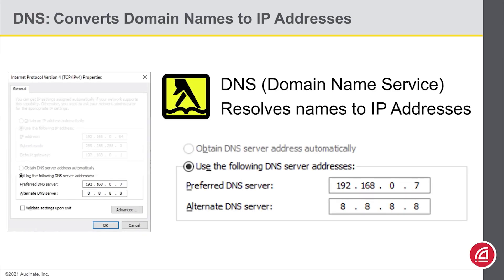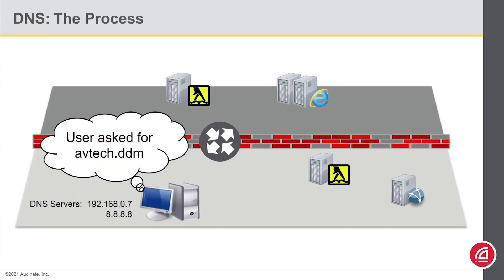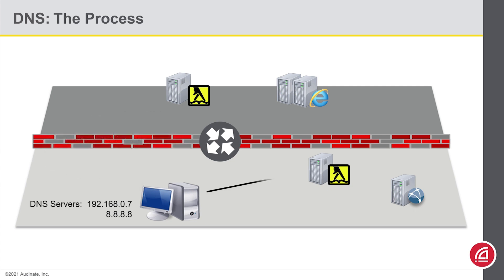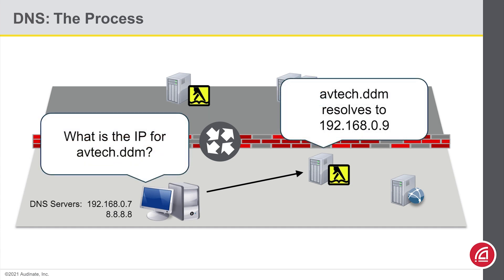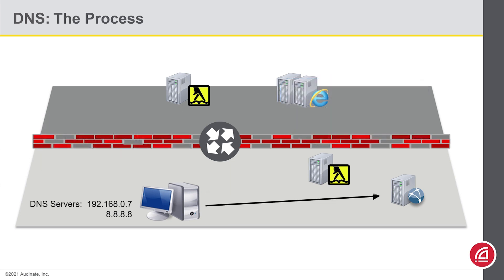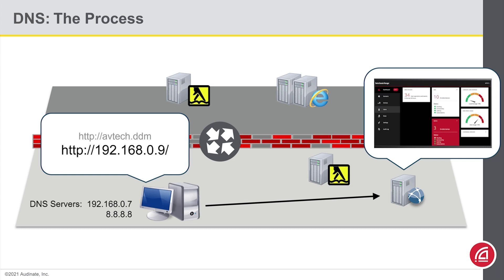Here you can see the typical computer settings. Below the IP address, subnet mask, and gateway, you can see DNS. I've listed the IP address of two servers — one on my local network where I can host some simple names for servers I'm going to set up, and the other is on the internet to handle everything else. Let's suppose I ask my web browser to go to avtech.ddm — a name I've given to my Dante Domain Manager server on the local network. If this is the first time I've asked my browser to find this server, it won't know the IP address, so it'll go down its list of DNS servers to resolve this. Since I've listed my local server first, we'll ask that server. Since this is something I've set up locally, it knows the answer and reports back. My computer can remember that answer, complete the connection, and deliver the server's web interface to me.